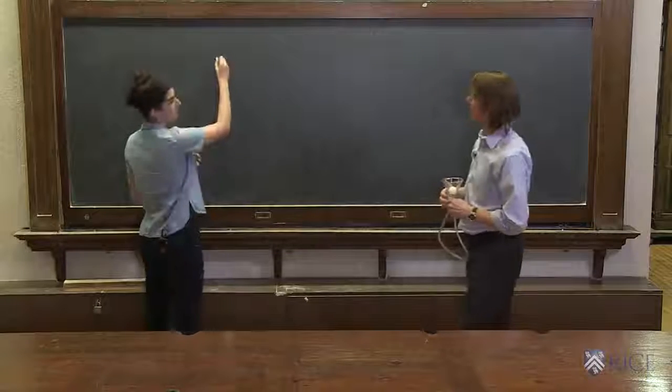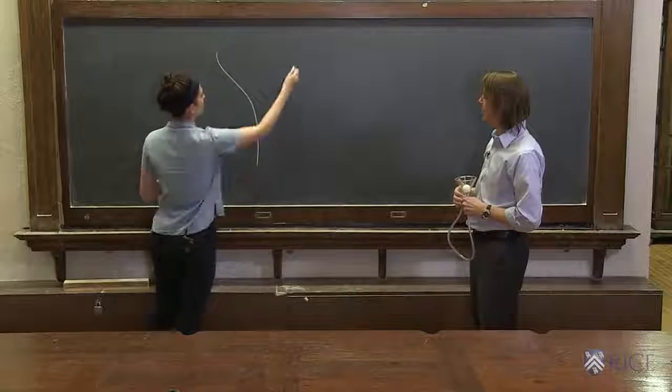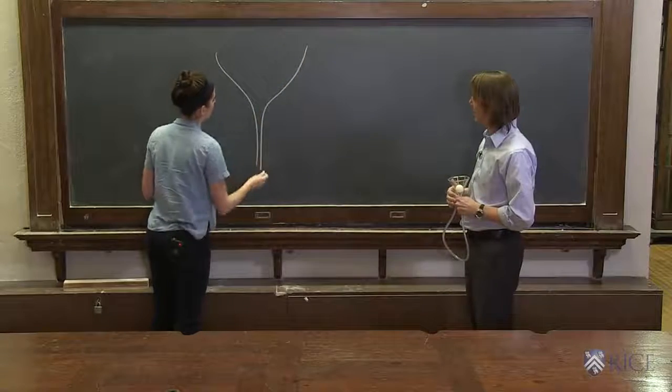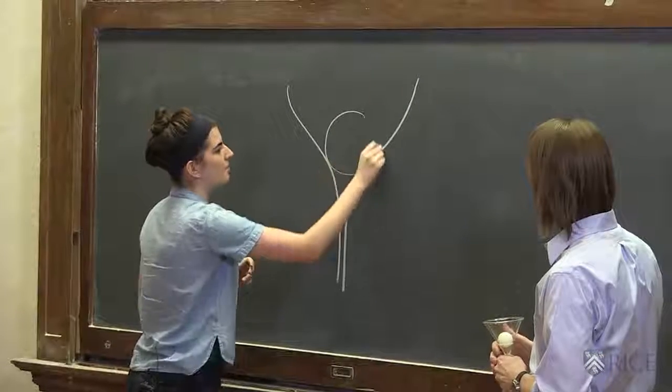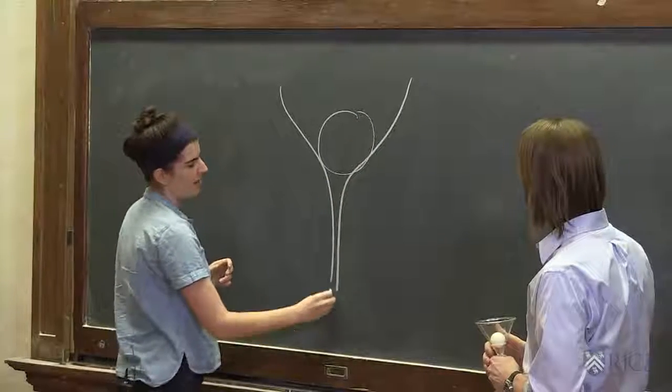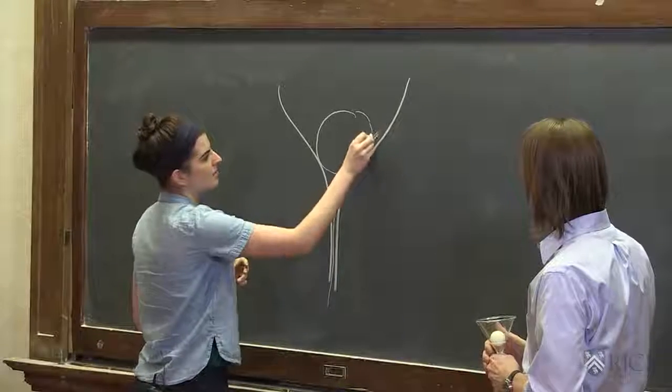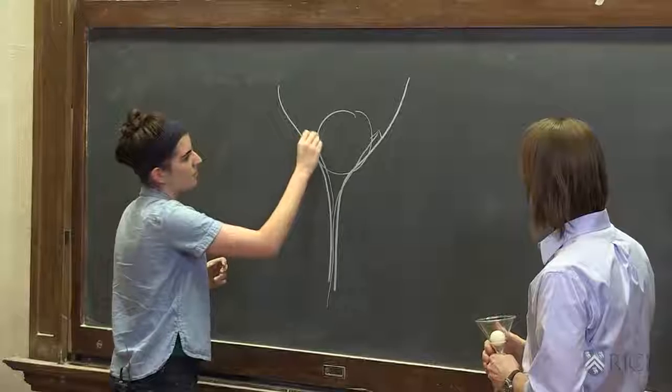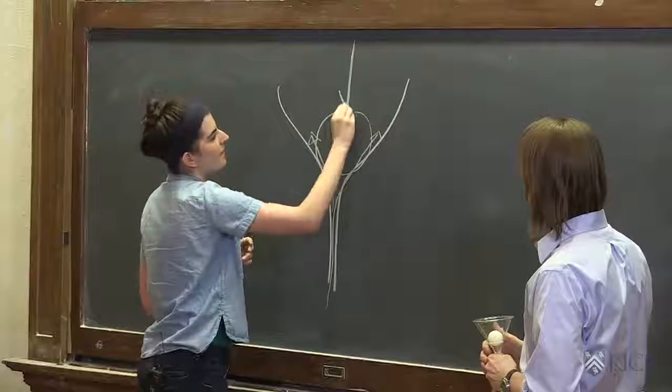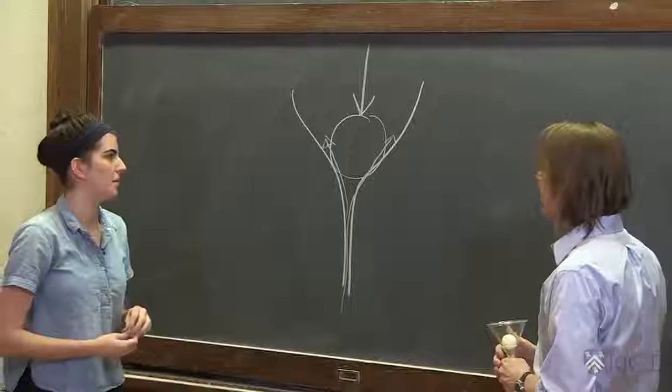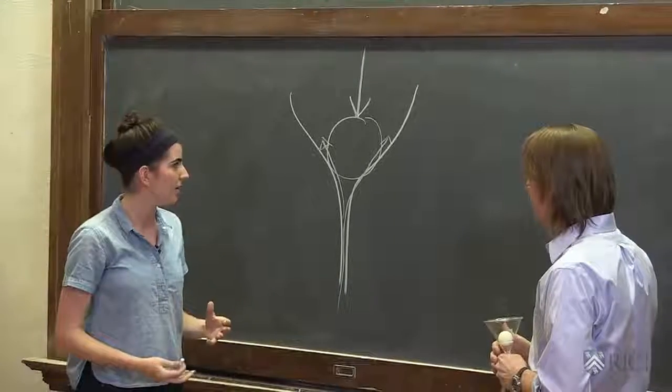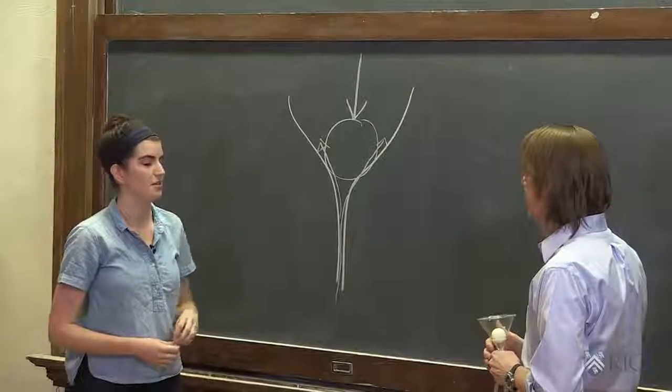So basically, it's called the Bernoulli effect. If you have the funnel right here, here's the ping pong ball. As you blow the air up the tube, you've got really low pressure areas right here. And the high pressure pushes down on the ball. So actually, the harder you blow, the harder the pressure.